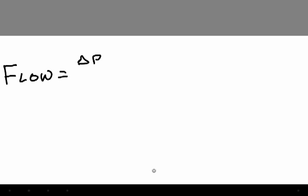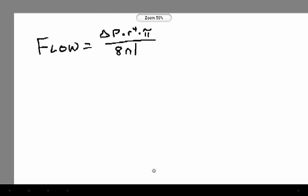Let's discuss Poiseuille's Law. Poiseuille's Law states that flow is equal to pressure times radius to the fourth power times pi over eight times the viscosity of the substance times the length of the substance.